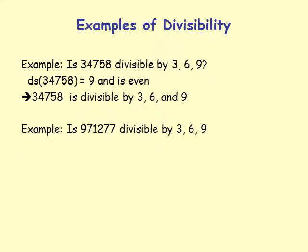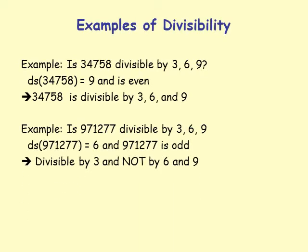Another example: is 971277 divisible by 3, 6, and 9? Its digit sum is 6, and the number is odd. That means it is divisible by 3 but not by 6.